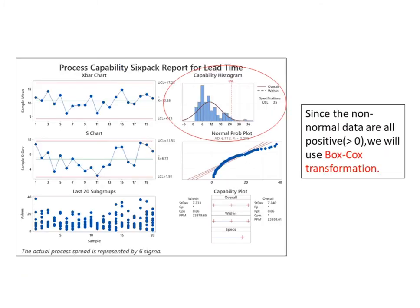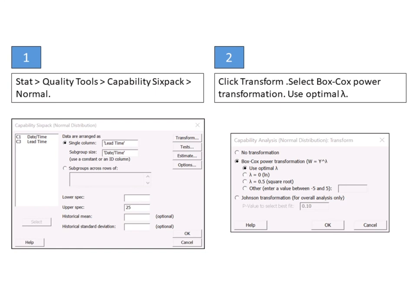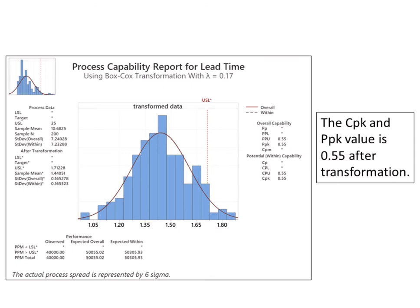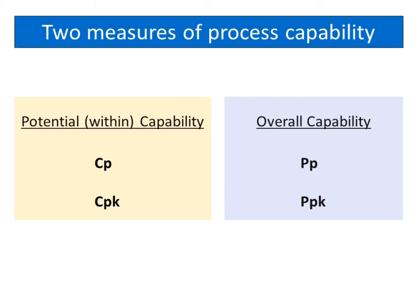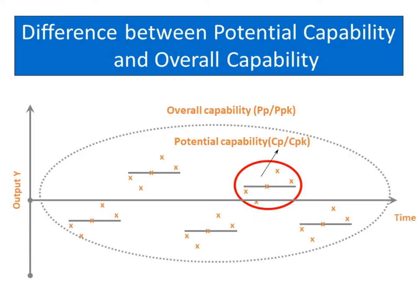Since the non-normal data are all positive greater than 0, we will use Box-Cox transformation. Select Stat > Quality Tools > Capability 6-Pack > Normal. Click Transform, select Box-Cox power transformation, and use optimal lambda. The CPK and PPK value is 0.55 after transformation. There are two measures of process capability: potential capability, represented by CP and CPK, and overall capability, represented by PP and PPK. Potential capability only accounts for the variation within the subgroups, while overall capability accounts for the overall variation of all measurements taken.